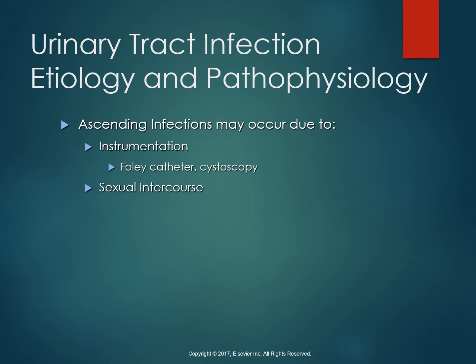The risk of ascending infection is increased when we have those indwelling objects or any instrumentation, like having a cystoscopy done. Instrumentation of the urethra can push bacteria that's normally around the perineal area into the sterile distal urethra and bladder. Also, sexual intercourse can increase the risk of ascending infection because of the pushing and passage of bacteria up the tract.